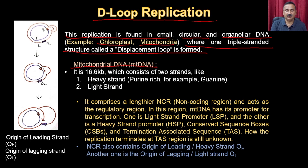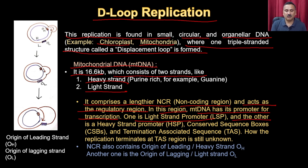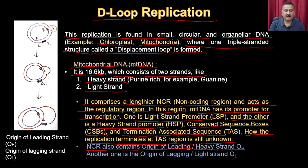Mitochondrial DNA is 16.6 kb and consists of two strands: the heavy strand (inner) and the light strand (outer). It has a lengthy non-coding region (NCR) that acts as the regulatory region, containing the mitochondrial promoters — the light strand promoter and the heavy strand promoter (HSP). Conserved sequence blocks (CSBs) and termination-associated sequences (TAS) are also present, though how replication terminates at TAS is still not fully known. The NCR also contains the origin of the heavy (leading) strand, called OH, while the origin of the light (lagging) strand is on the light strand.